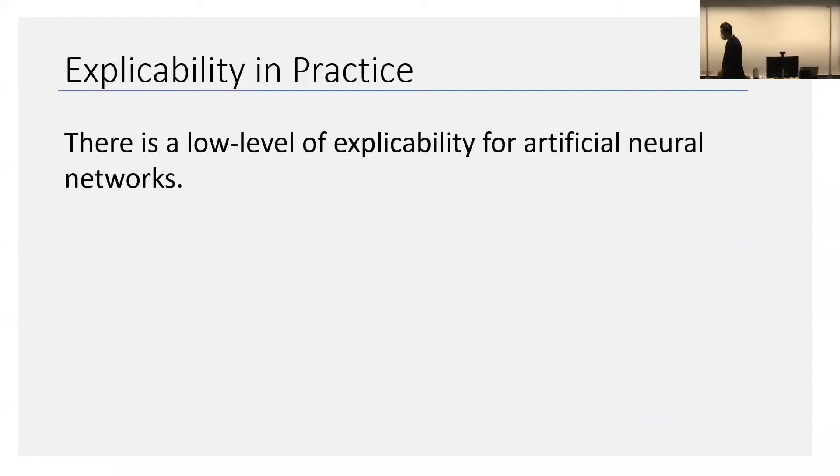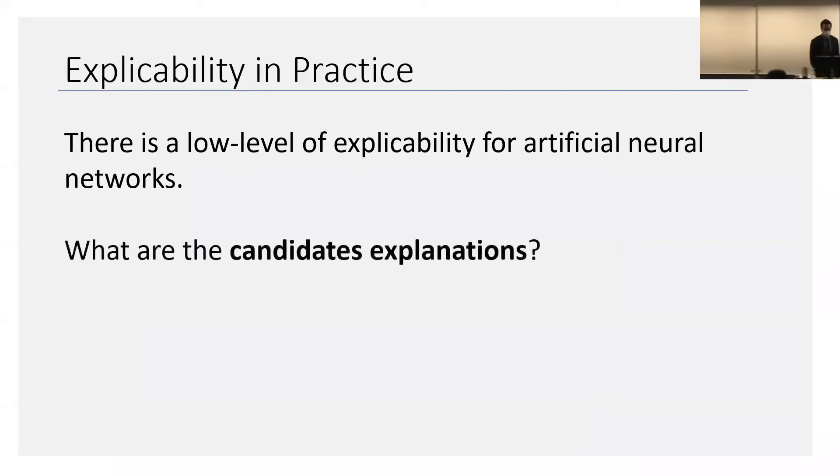So in general, there really is not much explicability with respect to artificial neural networks. We just can't explain much. Now I think I've been sort of cheekily avoiding this, but what do I mean by an explanation in terms of artificial neural networks?